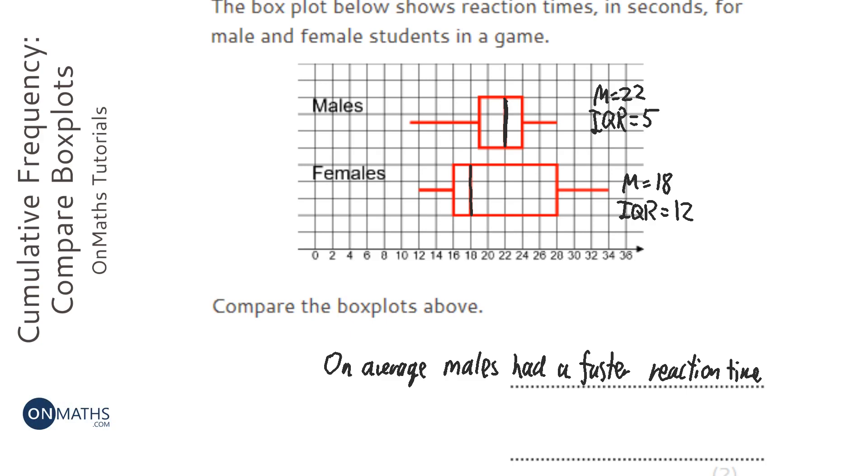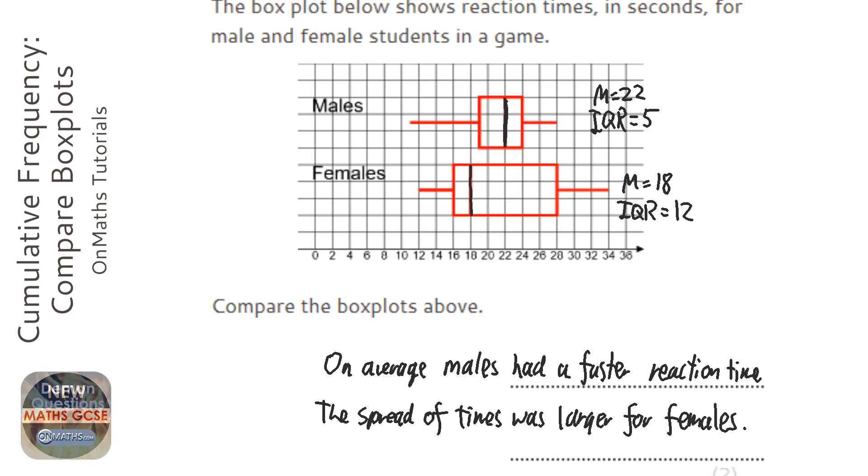And then you say the spread of times was larger for females, and again you can quote the figures, that the interquartile range is 12 for the females and only 5 for the males. So you could say the males were more consistent because the interquartile range was smaller.